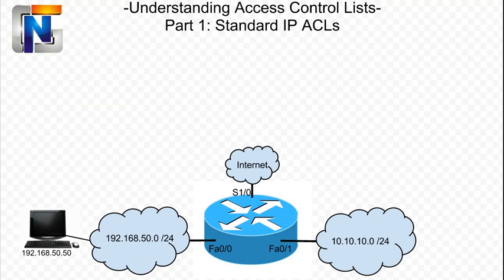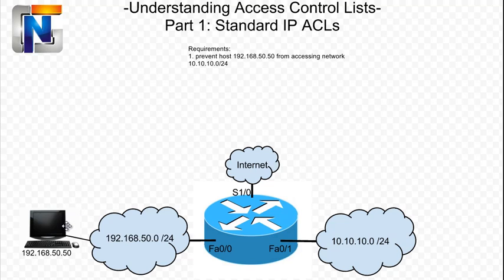Now we're going to begin the actual exercise by looking at some requirements. The first requirement is we would like to prevent host 192.168.50.50, which is down here in the bottom left, from accessing the network 10.10.10.0, which is over here on the right. We're going to need to create a list that prevents this host from talking to this network. This network is connected to FastEthernet0.1. And if you remember from the rules we stated earlier, we need to apply the access list closest to the destination. So in this case, the destination is this 10.10.10.0 network, and we'll be applying the access list on FastEthernet0.1.